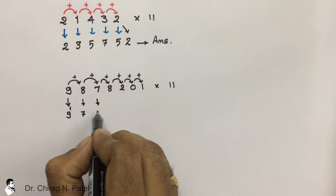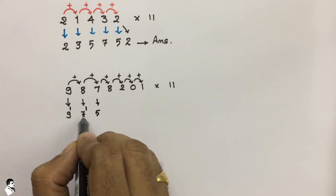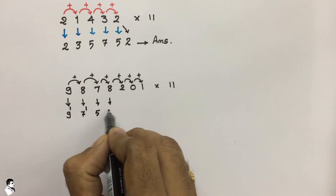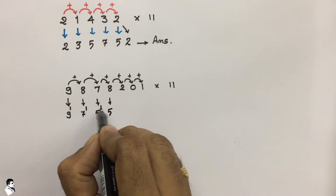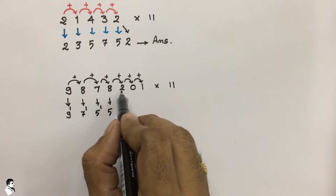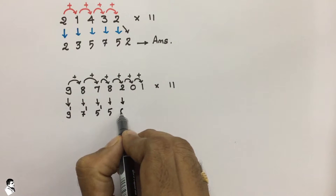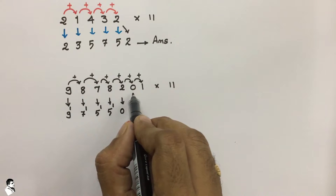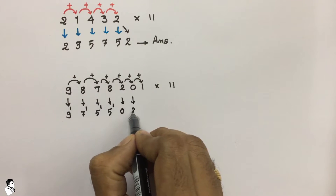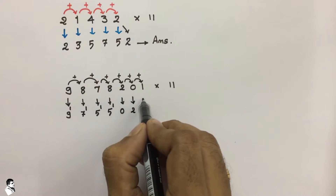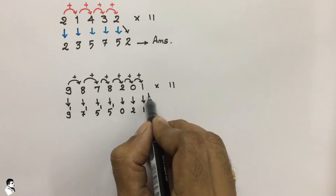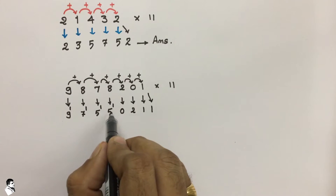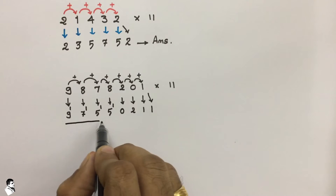Then 8 plus 7 is 15, so write down 5 and 1 carries over. Again 7 plus 8 is 15, so write down 5 and 1 carries over. Again 8 plus 2 is 10, so write down 0 and 1 carries over. Then 2 plus 0 is 2, and 0 plus 1 is 1. Write down the last digit as it is.